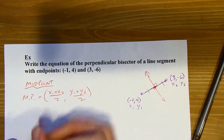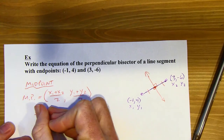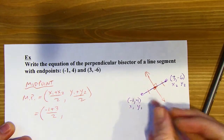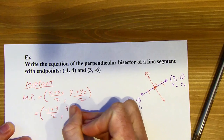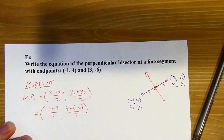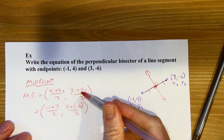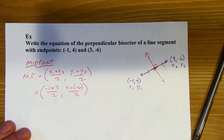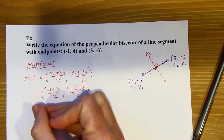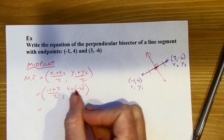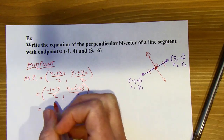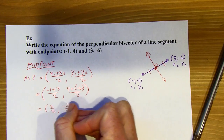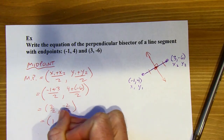Plugging negative 1 and 3 for the x's, and 4 and negative 6 for the y's into the midpoint formula. Some people subtract here, thinking of the distance or slope formula, but we're just averaging the x's and y's — no subtracting. This gives 2 over 2 and negative 2 over 2, which simplifies to the midpoint (1, negative 1).